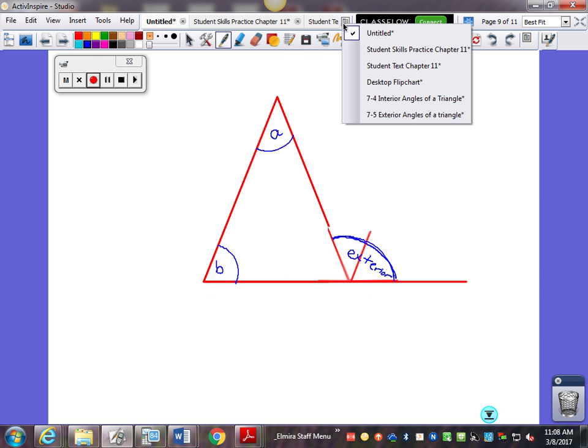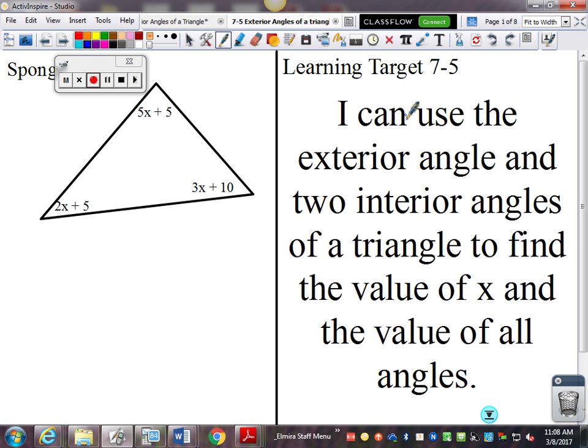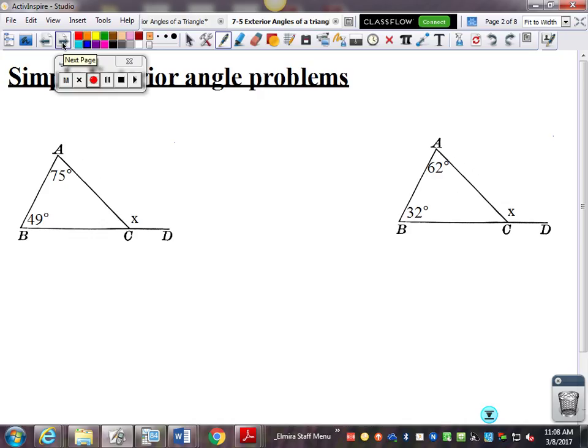So I've got an interior angle and an interior angle, and they're going to add together to equal my exterior angle. So 49 plus 75 equals 124, so x is going to be 124 degrees.